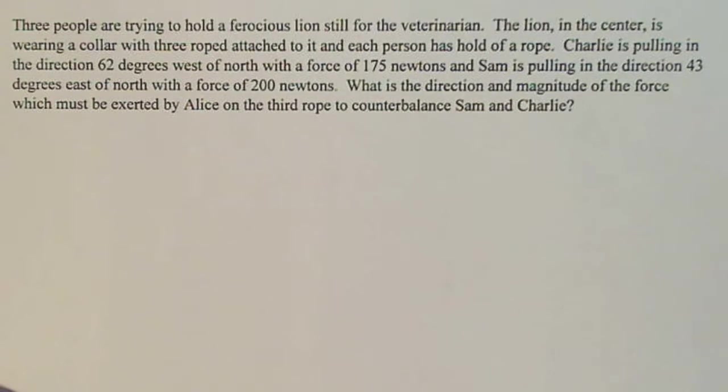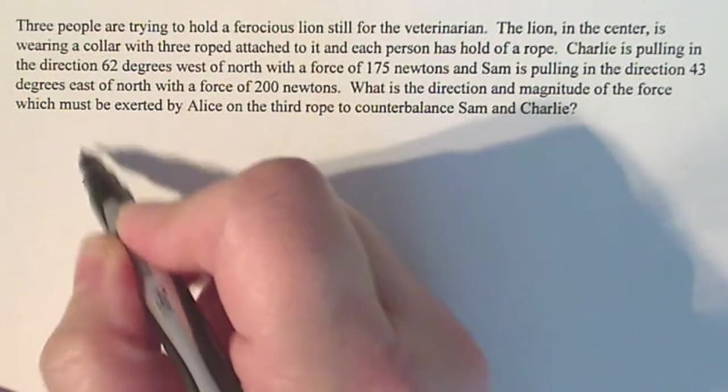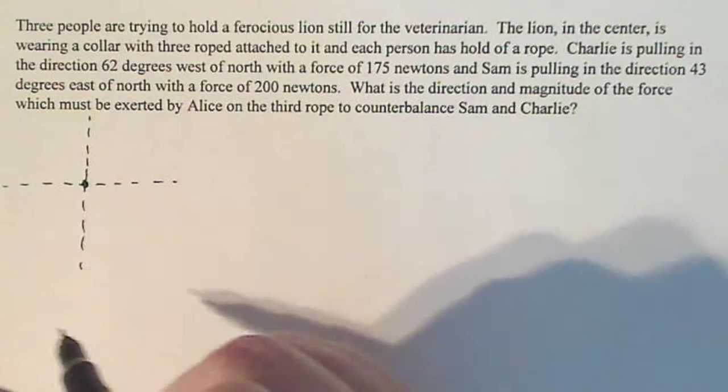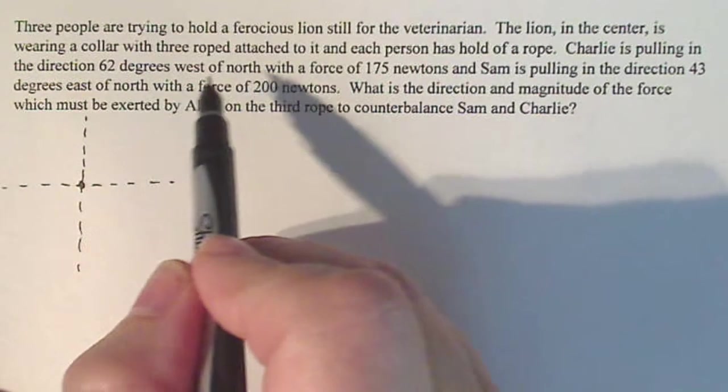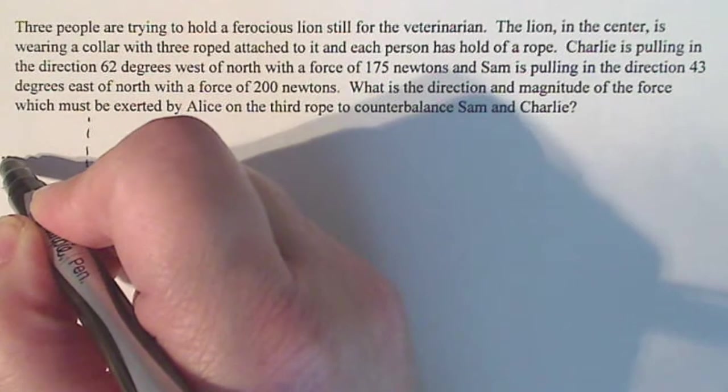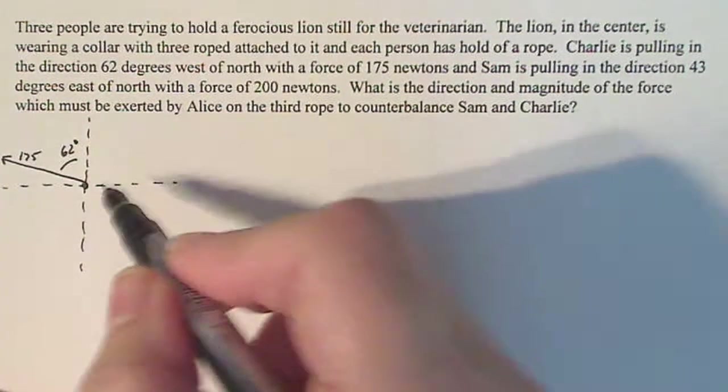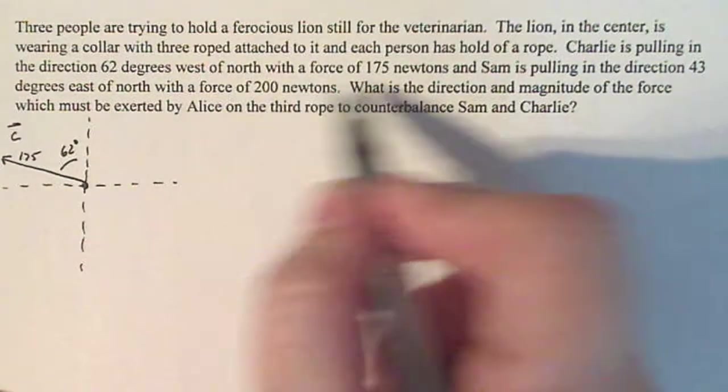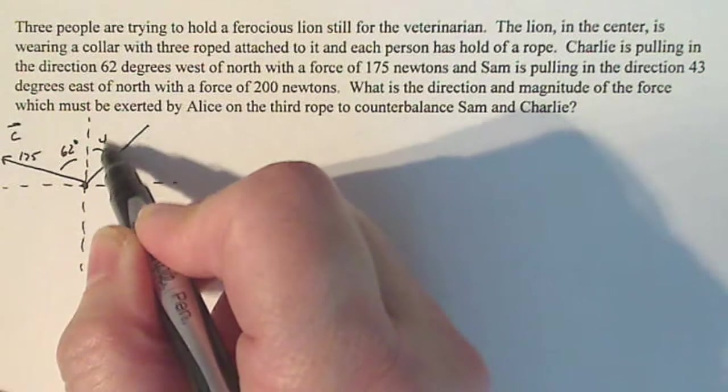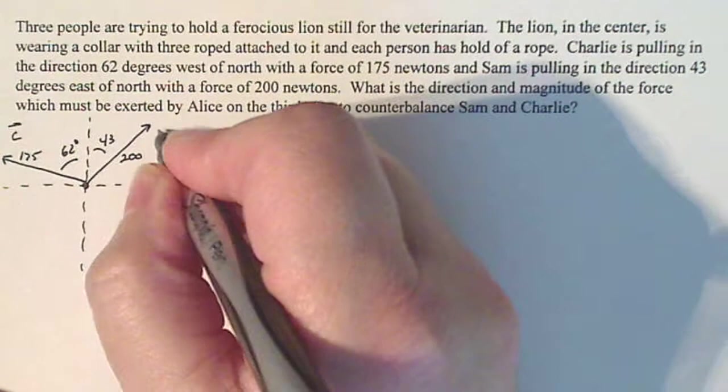So now there's a lot of words there. Let's draw a picture and set up the problem based on what we understand of forces. All right, so this is north and south axis, this is east and west axis. There's where the lion sits. Charlie's pulling in the direction of 62 degrees west of north at a force of 175 newtons. So if I draw him, this angle is 62 degrees, 175 newtons. I'm going to call it vector C for Charlie. And Sam is 43 degrees east of north, so 43 degrees east of north at 200 newtons. Always organizing it makes it better.